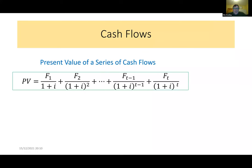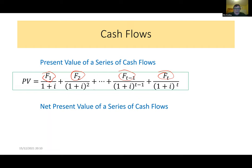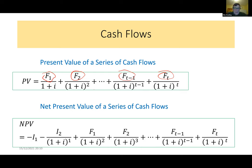If you have a series of cash flows — F1 euros in one year, F2 euros in two years, and so on — the present value of each is calculated separately: F1 over (1 plus i), F2 over (1 plus i) squared, and so on. This is a geometric series, so it's easy to sum using the geometric series formula to give the net present value of the series.